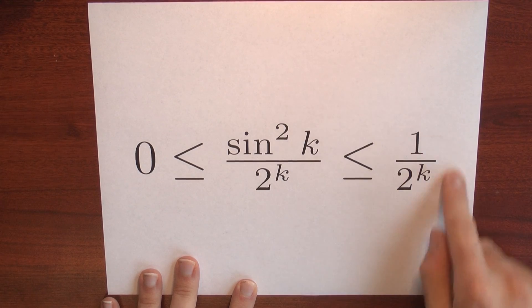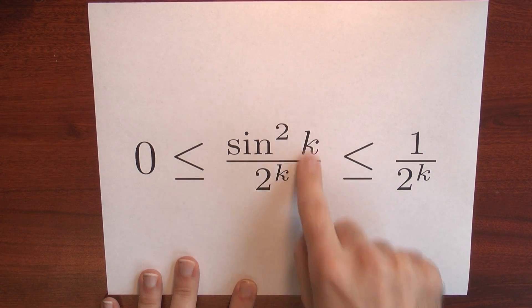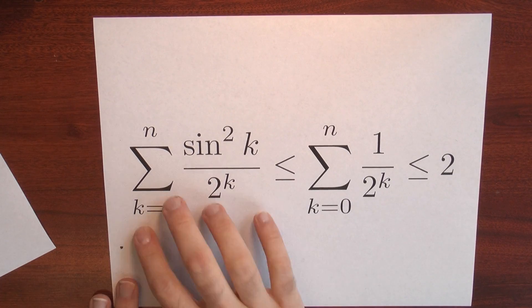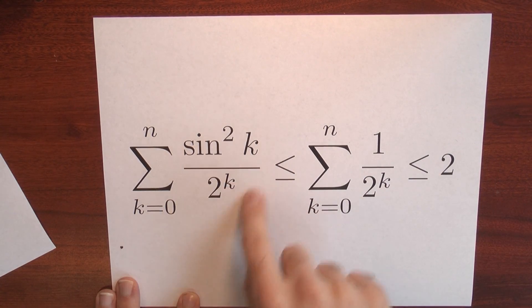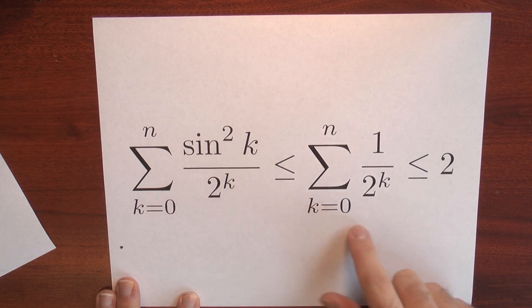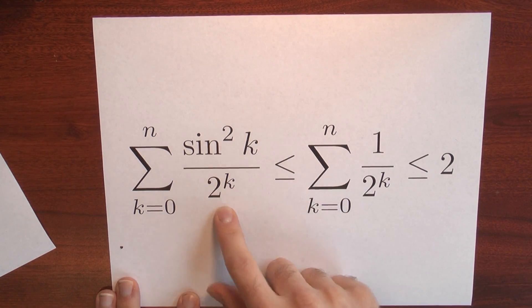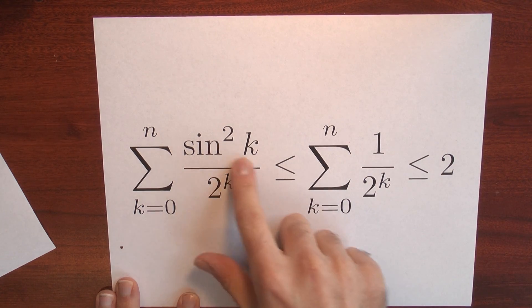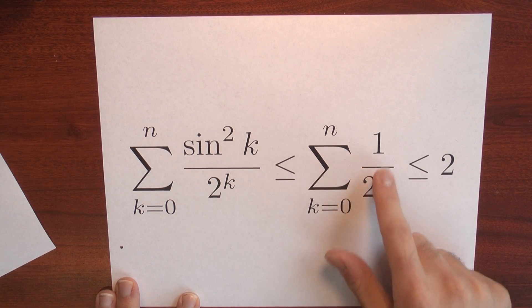Because this is less than this, if I add up a bunch of these, that's less than adding up a bunch of these. If I sum all of these terms, it's less than or equal to the sum of these terms, because each of these terms is less than or equal to each of these terms. And that's just because sine squared of k is less than or equal to 1.